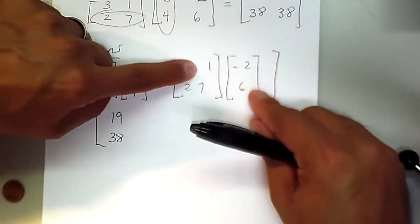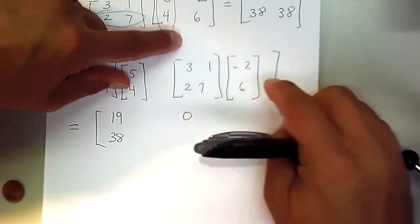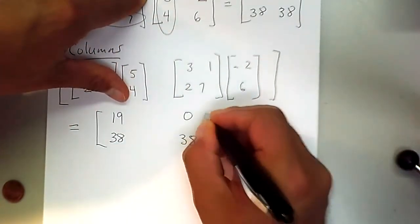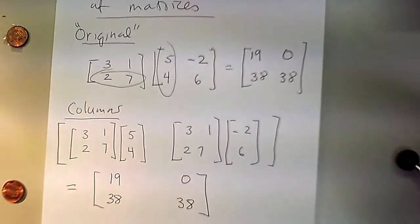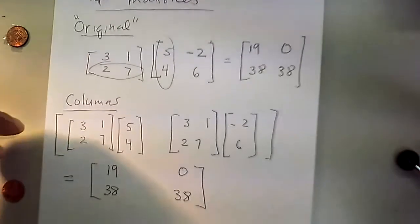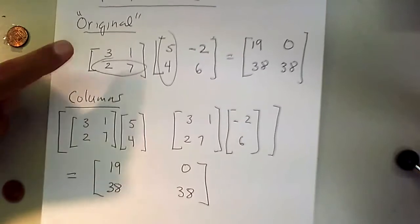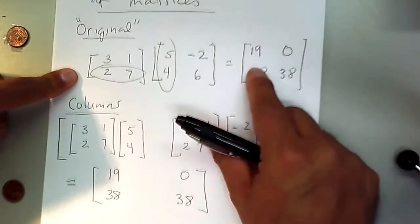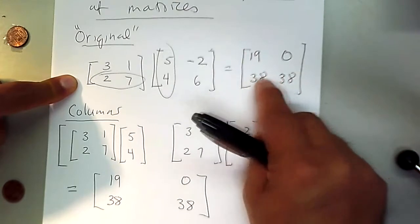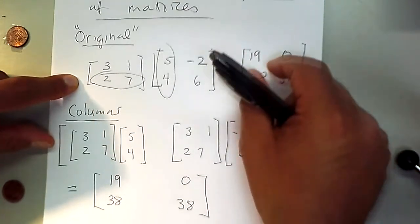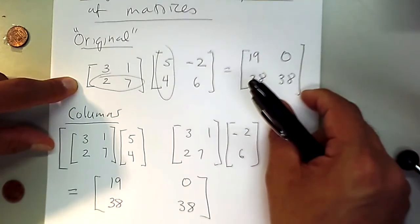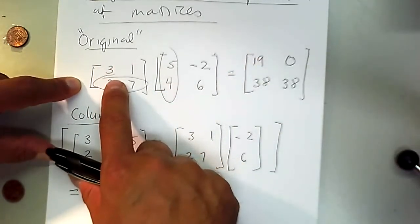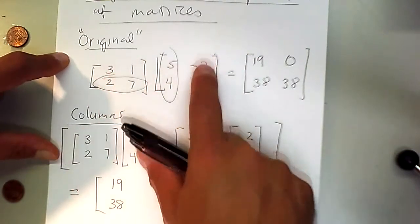It helps to think of matrix multiplication in different ways. We can zoom in on one element at a time, or think in terms of columns: the left matrix times each column of the right matrix produces the corresponding column of the result.